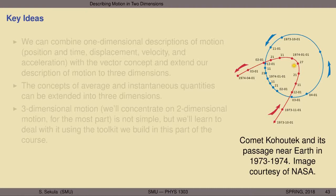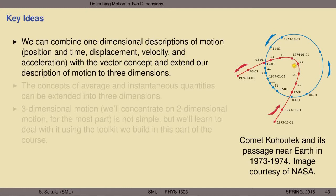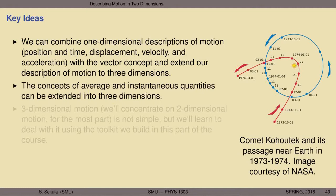The key ideas that we will encounter in this section of the course are as follows. We will learn that we can combine one-dimensional descriptions of motion — that is position and time, displacement, velocity, and acceleration — with the vector concept, and extend our description of motion to the full three spatial dimensions. The concepts of average and instantaneous quantities can also be extended into three dimensions.